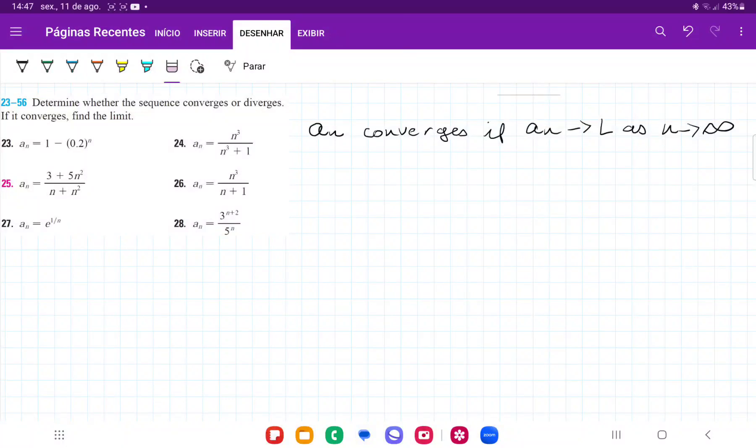So for number 25, they want us to tell whether this sequence over here converges or diverges. Now we can see that a sequence converges if the value of the sequence tends to a specific limit as n approaches infinity.